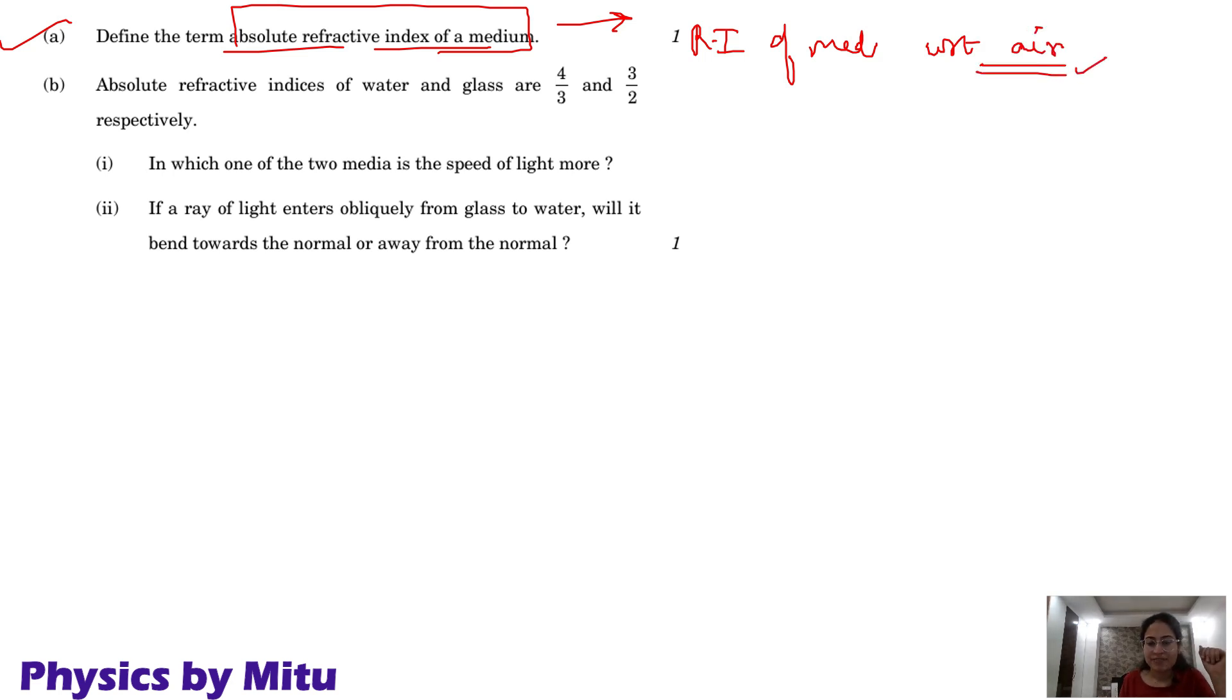As a formula, we have refractive index of medium 2 with respect to 1. We say it is speed of light in medium 1 upon speed of light in medium 2.